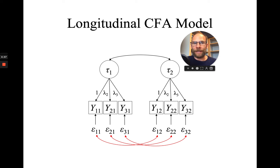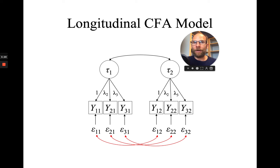Another downside is that this approach is not very parsimonious if you have many indicators and many time points, because then you would have to estimate many of these error correlation parameters, which leads to a very highly parameterized model. In that situation, you will often find that many of these error correlations are not statistically significant — they are near zero. Then what do you do with them? If you keep them in the model, you have parameters that are not needed — an overly parameterized model with effects that are zero.